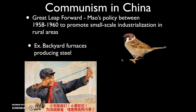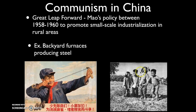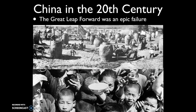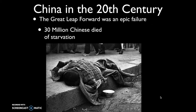Mao also had the idea of waging war against sparrows. For three days the Chinese made all kinds of noise, and many sparrows died of anxiety. The thinking was that sparrows ate the wheat crop — which they did — but sparrows also ate bugs. Once the sparrows were gone, there was an outbreak of locusts in the next growing season, which still destroyed many crops. The government produced propaganda images showing children standing on top of fields of grain so dense it seemed miraculous, but these were fabricated images. Ultimately the Great Leap Forward was an epic failure: 30 million Chinese people died of starvation.